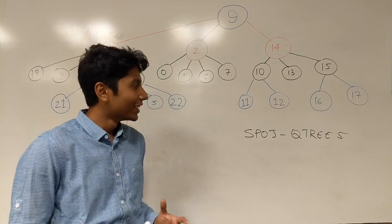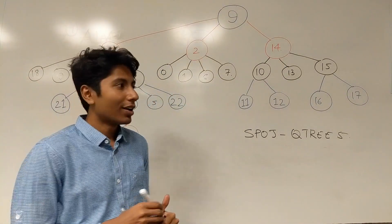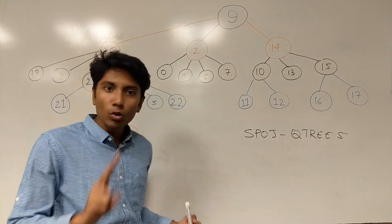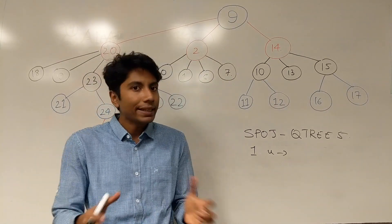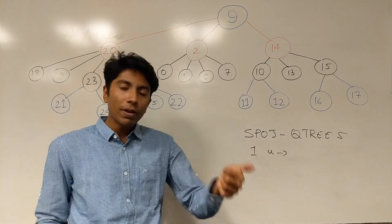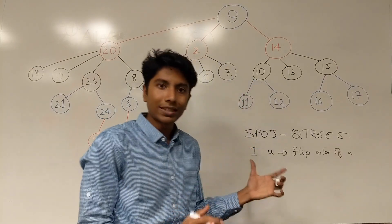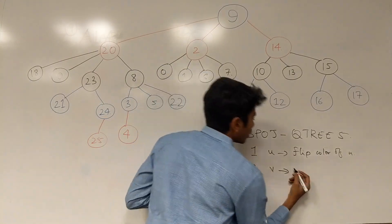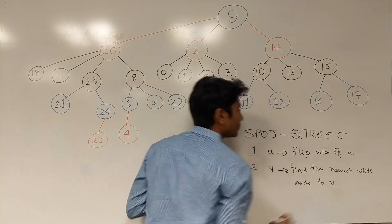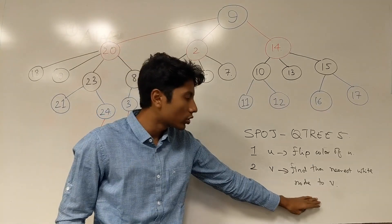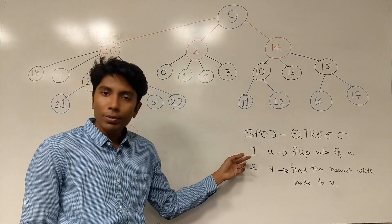Now let's solve a SPOJ problem: QTree5. It has a tree given to you with two types of queries. First is an update: all nodes are initially black, and you flip the color of node U. Second is a query: for a given node V, find the nearest white node to V. Distances in the tree are arbitrary but given. So you have two operations: flip a node's color, and find the distance to the nearest white node.